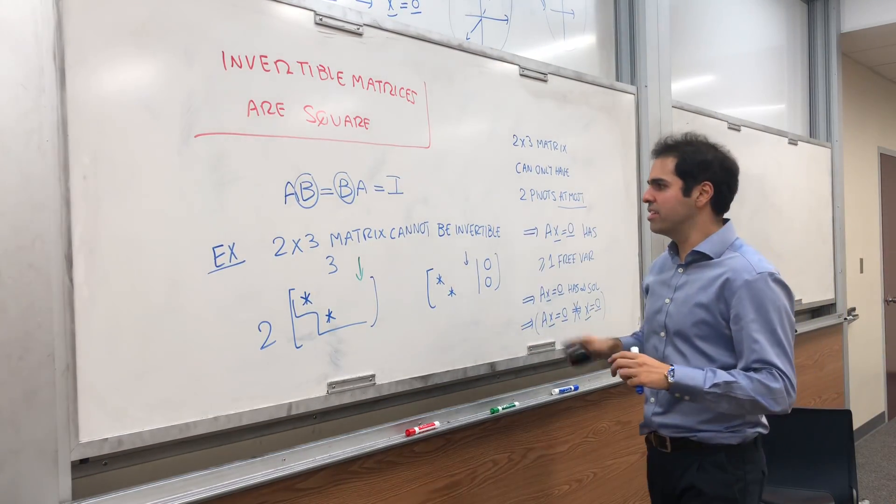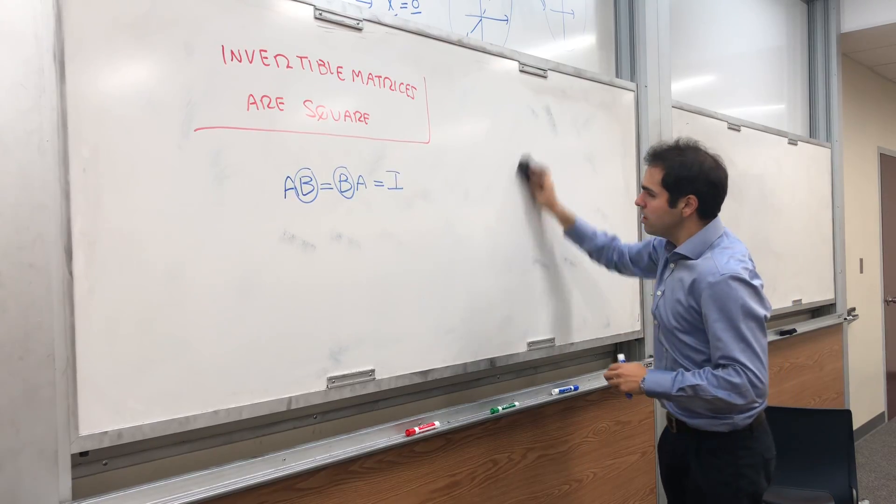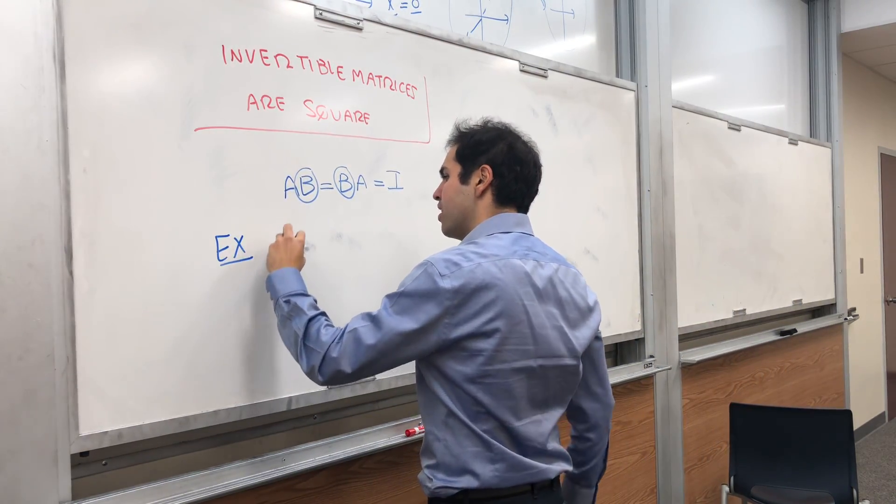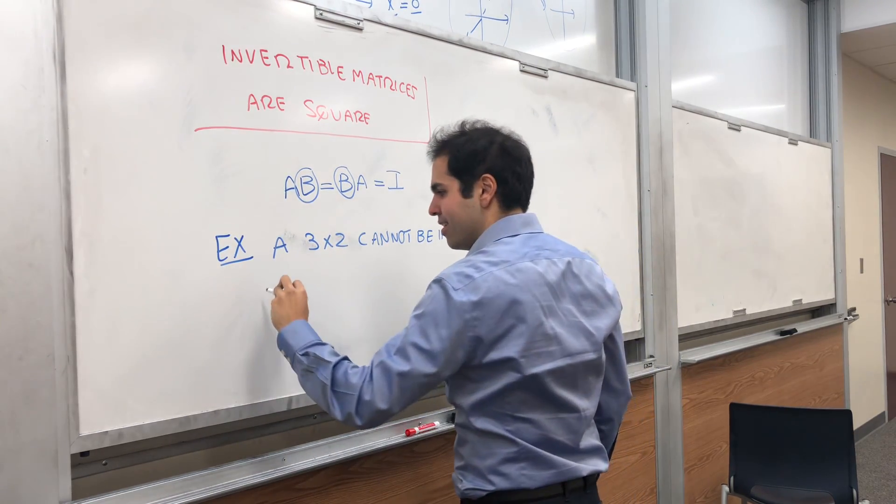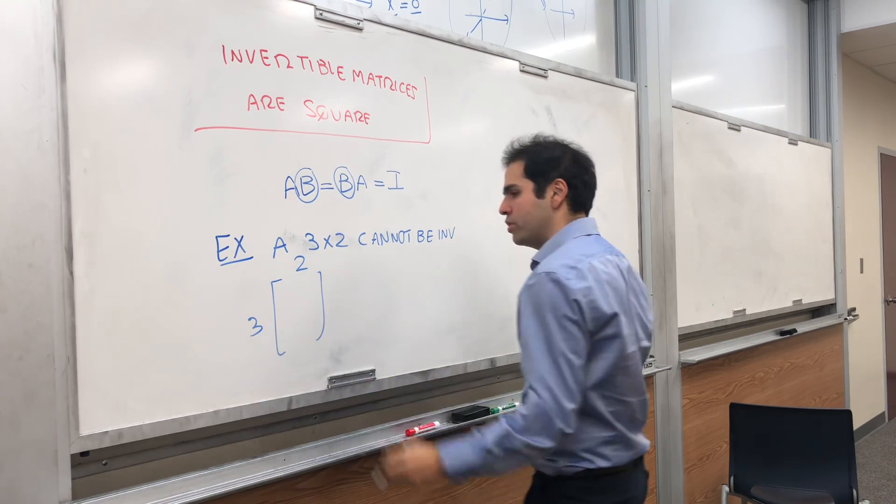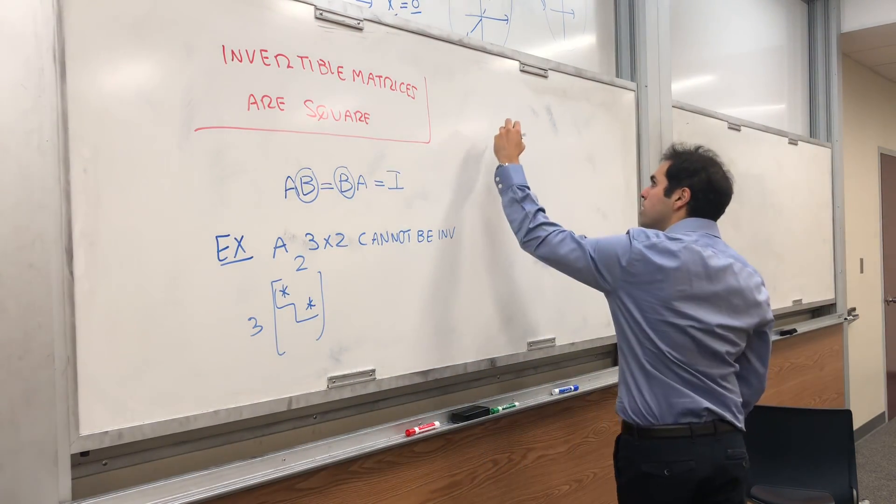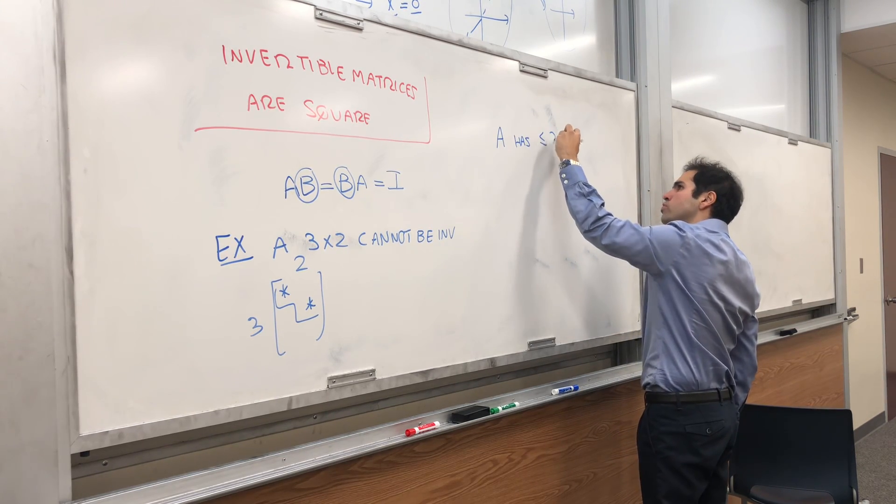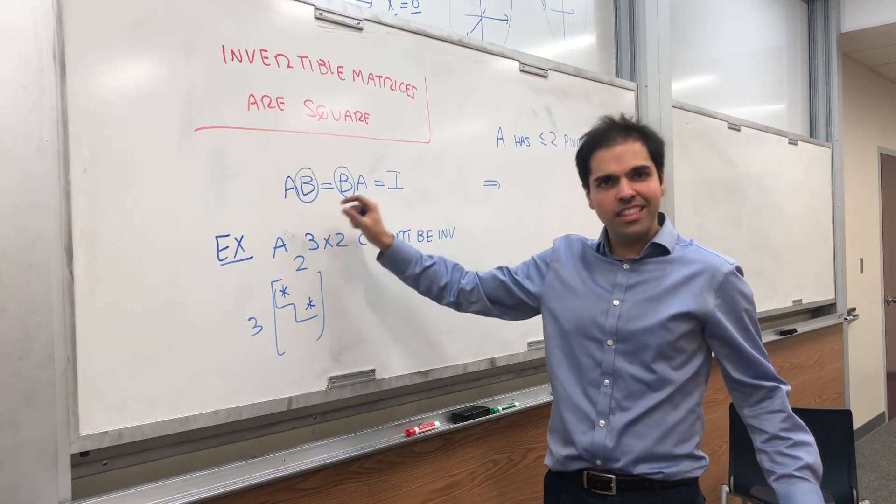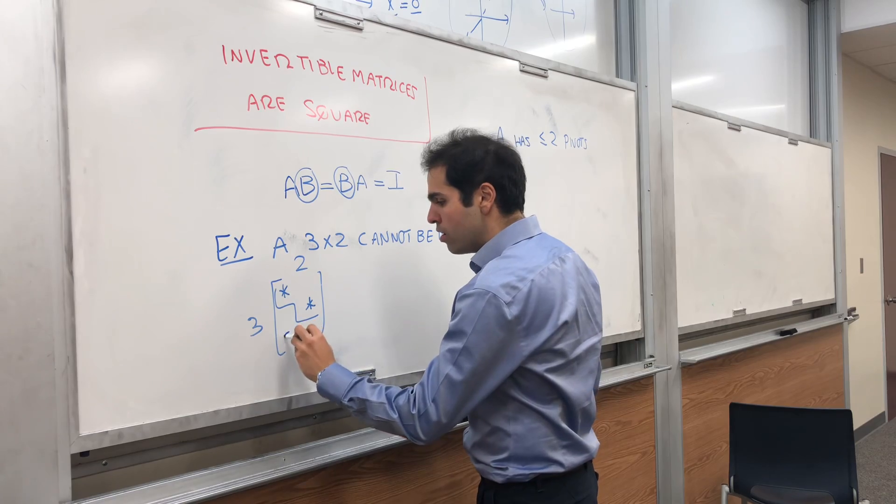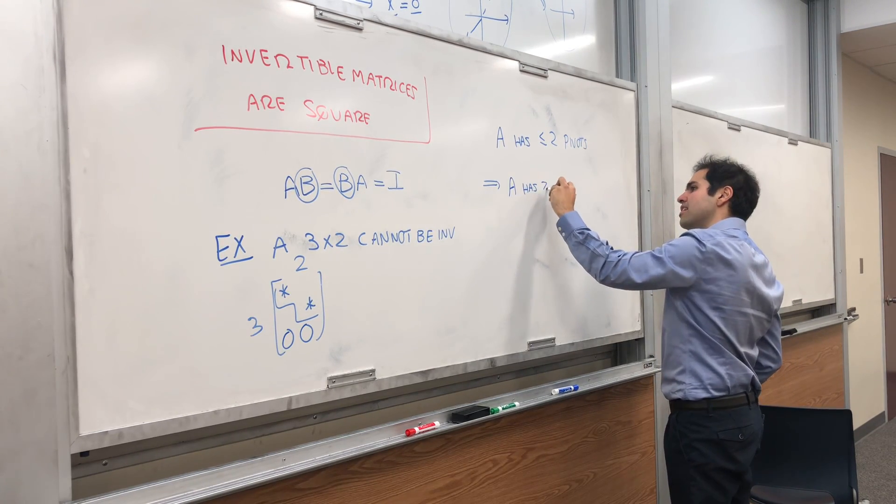Now, here we have the case where there are more columns than rows. Let's now do the case where there are more rows than columns and see what happens. So now let's do a three-by-two matrix. It cannot be invertible. Let's again draw a three-by-two matrix. Three by two. Again, best-case scenario, there can only be two pivots at most. So A has, at most, two pivots. Which means, because the number of pivots is less than the number of rows and the number of columns, what this means is that the last row is 0. So A has at least one row of 0s.